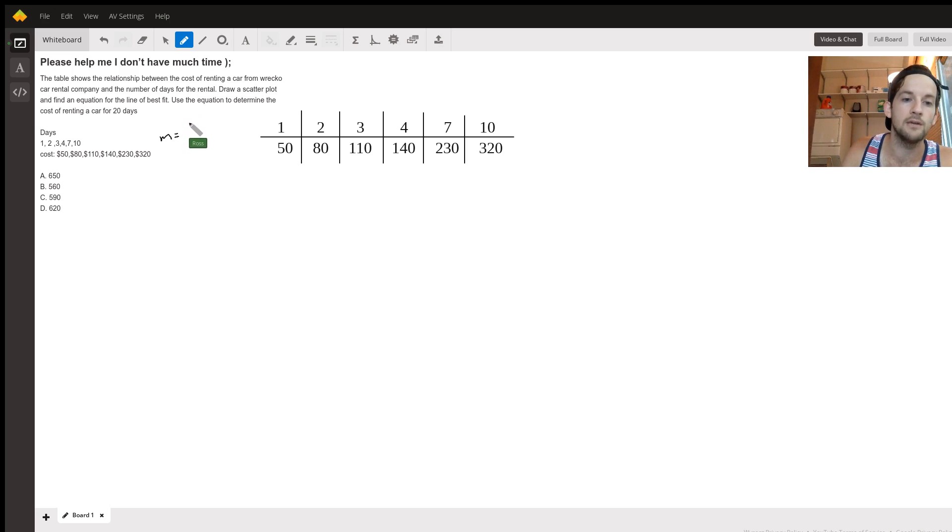A lot of times you see that written as y2 minus y1 over x2 minus x1. And so these top numbers here are our x's, the bottoms are our y's, because the top is independent, that's the number of days, and the bottom is how much money it will cost.